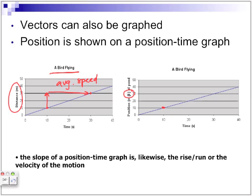If we take those same two points, but if it was a position time graph and we find the rise and run, we are now going to find the average velocity.